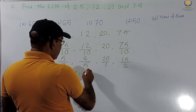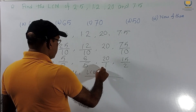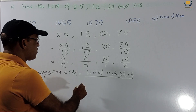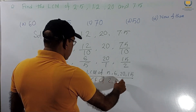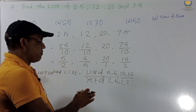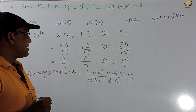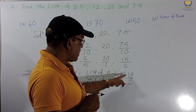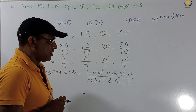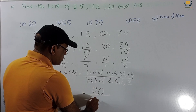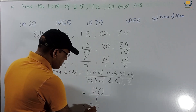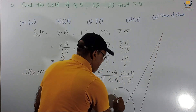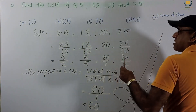Required LCM of fractions equals LCM of numerators divided by HCF of denominators. LCM of numerators 5, 6, 20, 15: LCM is 60. HCF of denominators 2, 5, 1, 2: HCF is 1. So LCM = 60/1 = 60. Therefore the answer is 60, which is option A.